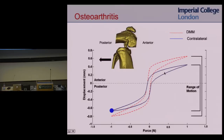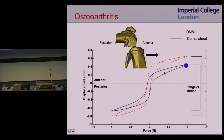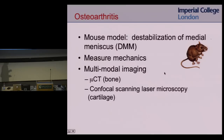It's called a destabilization model but nobody had ever measured the mechanics — are we actually destabilizing the knee? We use micro-mechanical testers to measure anterior and posterior motion, varus-valgus (side to side), and internal-external rotation. We bend the knee to about 60 degrees of flexion and apply force-controlled loading up to plus or minus one newton. In the injured side where we cut the meniscus, we see much higher range of motion — particularly in the anterior direction. That means the femur is sitting on the back part of the tibia, so we might expect to see most of the damage on the posterior portion of the tibia.